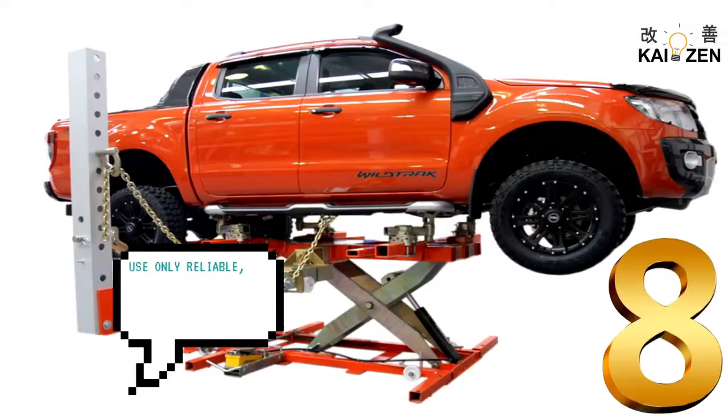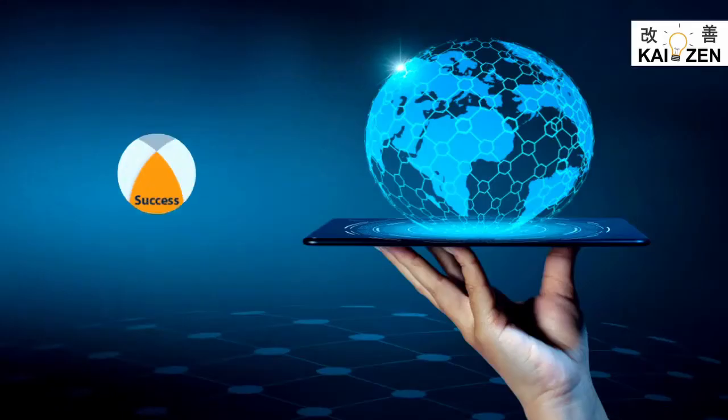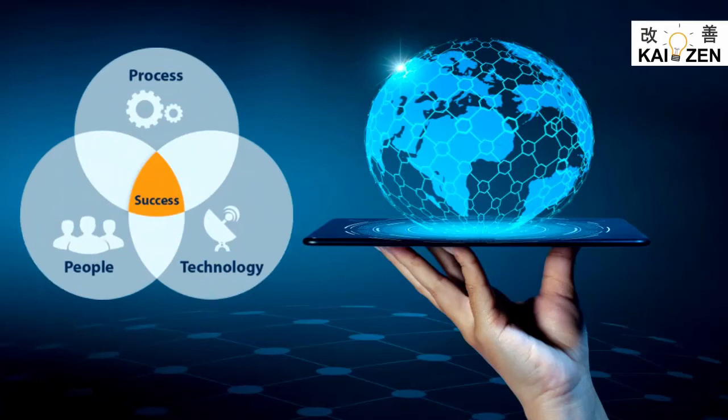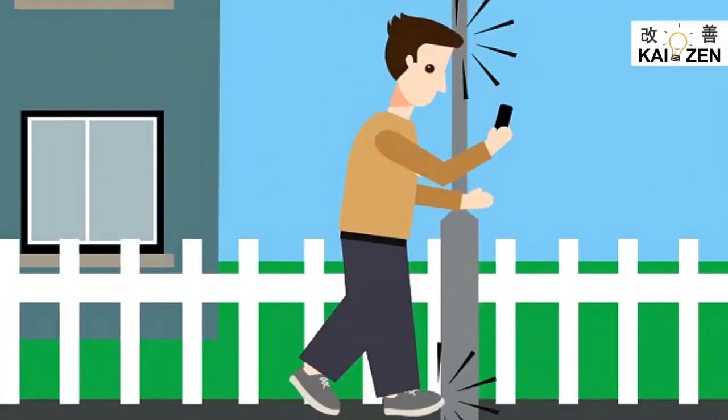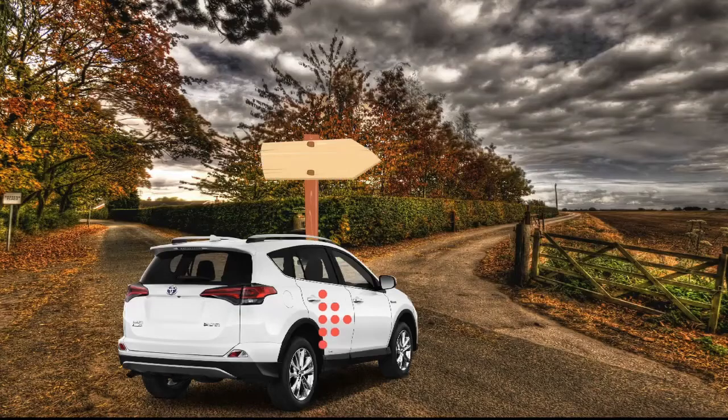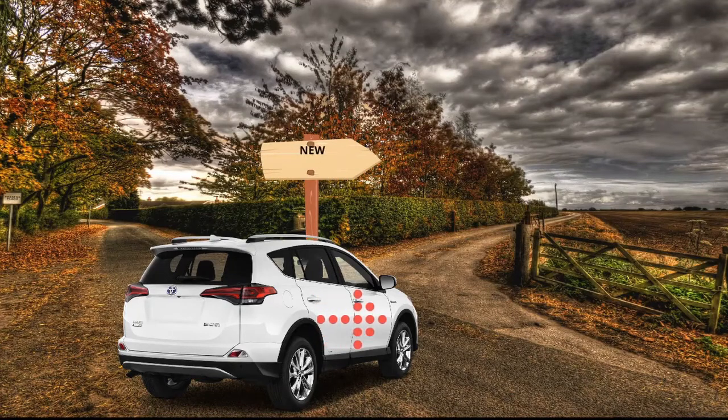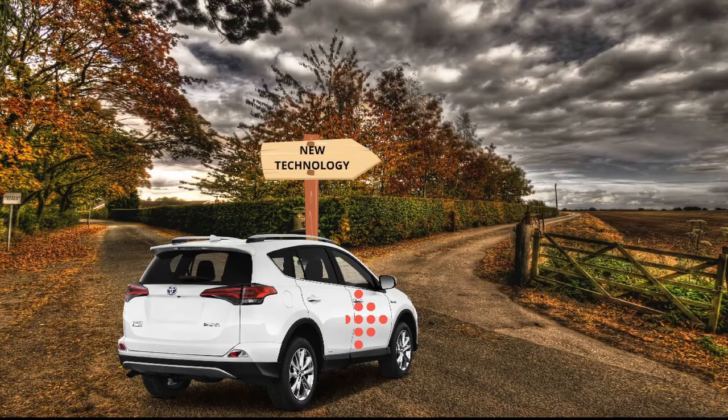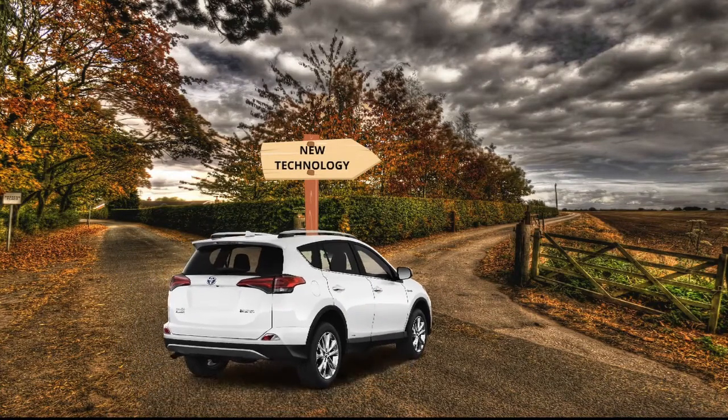Principle 8: Use only reliable, thoroughly tested technology that serves your people and processes. Technology should support people and processes. People and processes should not be subservient to technology. Toyota is always very careful in introducing new technology as it does not want the stability to be disturbed. New technology can be introduced, but trials have to be conducted carefully.